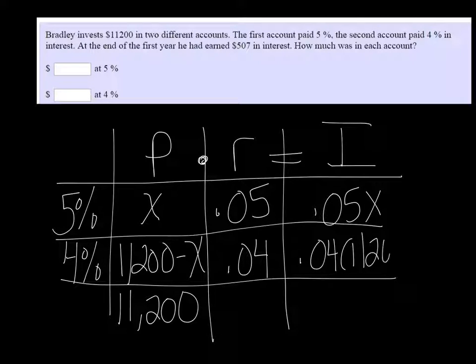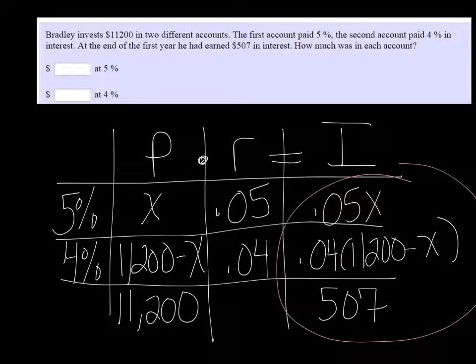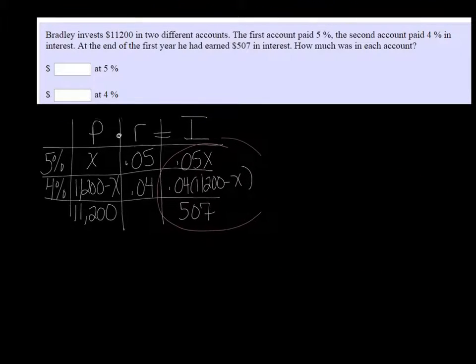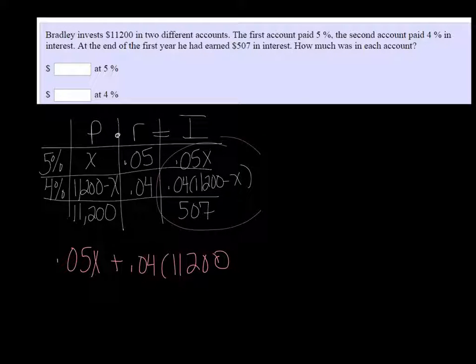And after we do that, we almost have our equation. We need to put the total interest. The total interest was 507. So we're going to use this last column to make our equation. So we have 0.05X plus .04 times 11,200 minus X equals 507.